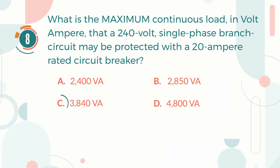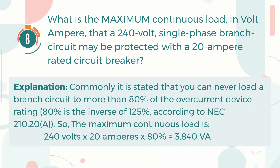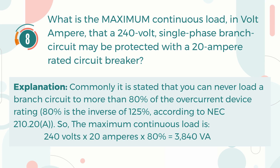The correct answer is C. 3,840 volt-amperes. Explanation: Commonly, a branch circuit cannot be loaded to more than 80% of the overcurrent device rating — 80% being the inverse of 125% according to NEC 210.20A. So the maximum continuous load is: 240 volts multiplied by 20 amperes, then multiplied by 80%, equals 3,840 volt-amperes.